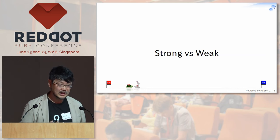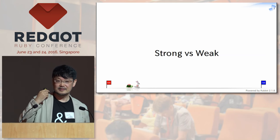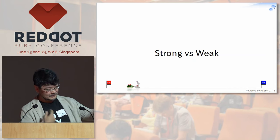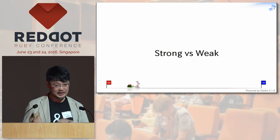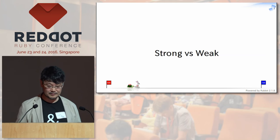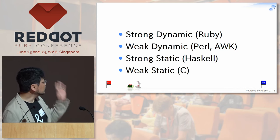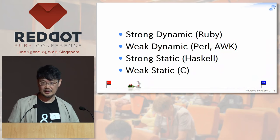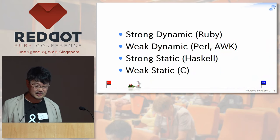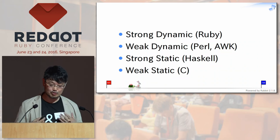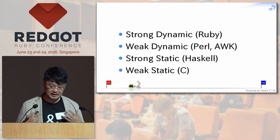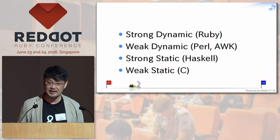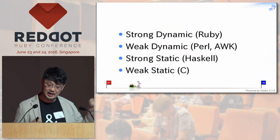Some programming languages are strong — that means types cannot be changed or converted automatically. Or weak — you can break the type system in some way. Ruby is a strong dynamic type programming language. Perl or Awk is a weak dynamic type programming language. Haskell and other static type programming languages are strong static. And C, which can cast pointers to other types of pointers, is a weak static programming language.